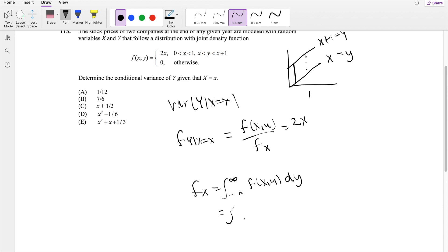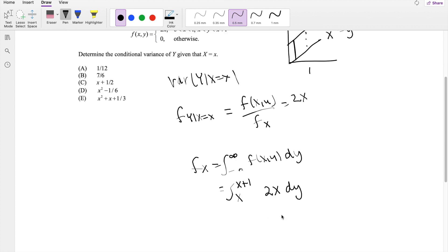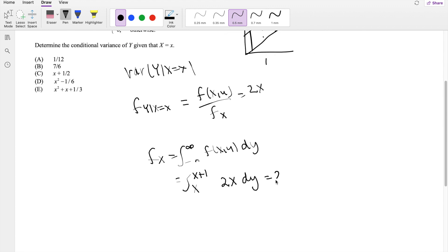So then the lower limit is going to be whatever X is going to be, right? Okay, and the upper limit is just going to be X plus 1. And f(X,Y) we know is 2X dy, so then this is equal to 2X.